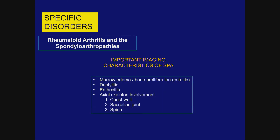There are important imaging characteristics of SPA: marrow edema, bone proliferation, whiskering or osteitis — those two are related — dactylitis, which is a very important one, and physitis, more so than in rheumatoid. And of course, in some cases there is involvement of the axial skeleton — chest wall, sacroiliac joint, and spine.